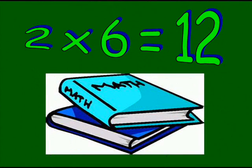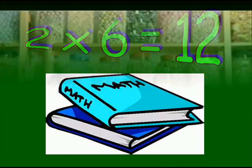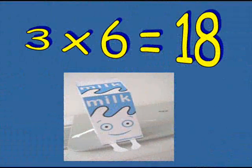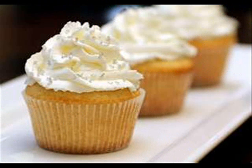Two sixes are twelve. Take your maths book down from the shelf. Three sixes are eighteen. Maths is the milk and ten tables are the cream.